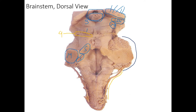We have to talk about the fourth ventricle because it's deep to the cerebellum and we can see it in this slide. The fourth ventricle is roughly diamond-shaped, located in this region here. The anterior wall of that fourth ventricle is called the rhomboid fossa. The rhomboid fossa has several important features that we need to talk about. We've talked about all these nuclei for the cranial nerves, and in this posterior view of the pons we can see some of the bumps where these nuclei are located. These bumps are called tubercles, trigones, or colliculi.